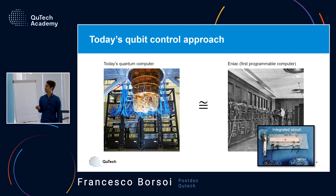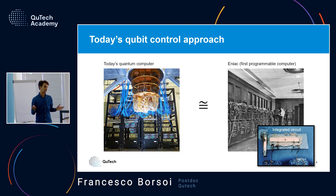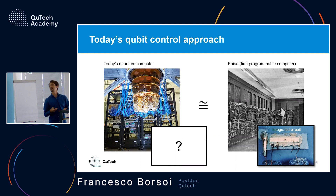To go from ENIAC to our smartphone took several inventions, but perhaps the most important was the invention of the integrated circuit after the transistor, which enabled everything to be downscaled in a compact way. Now we must ask: what are the inventions we need to downscale our quantum computers?